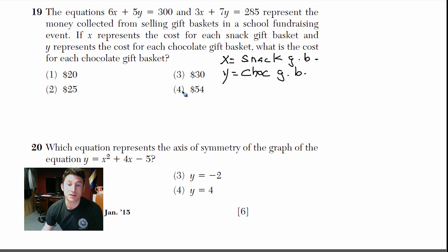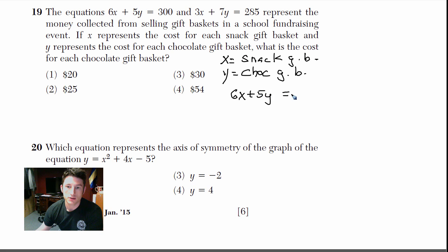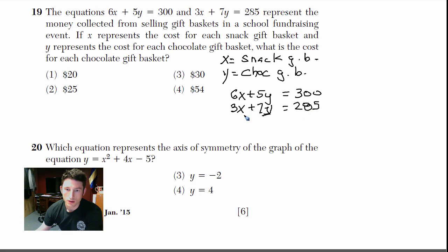This is a system of equations. We want to cancel one variable out to solve for the other. I'll rewrite: 6x plus 5y equals 300, and below it 3x plus 7y equals 285 with variables lined up. It would be nice if the x-coefficients matched, so I'll multiply the bottom equation by 2.